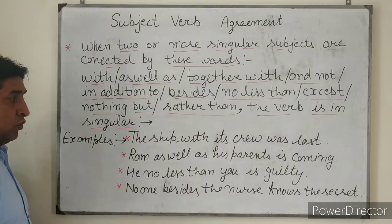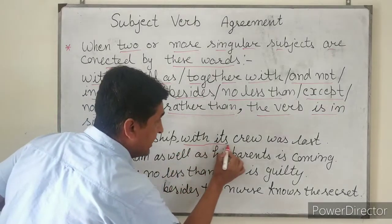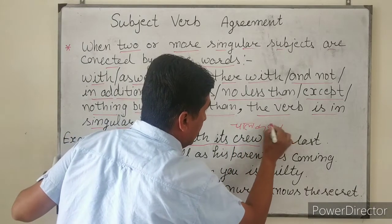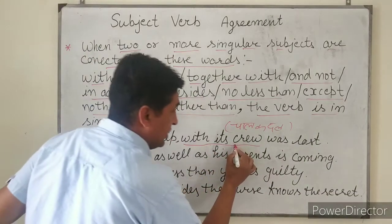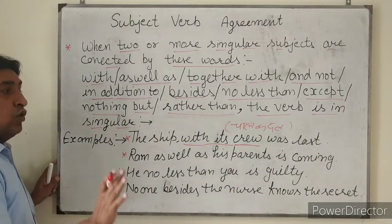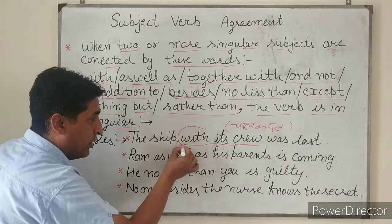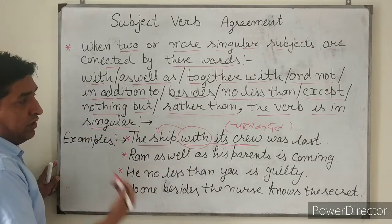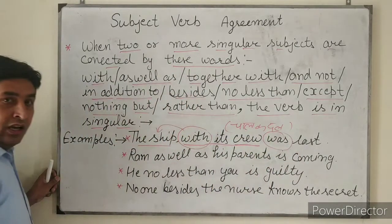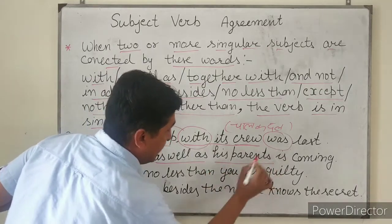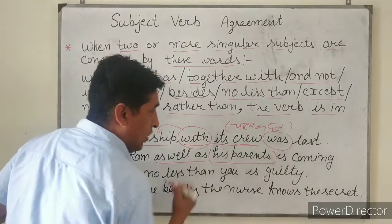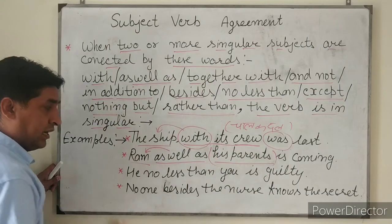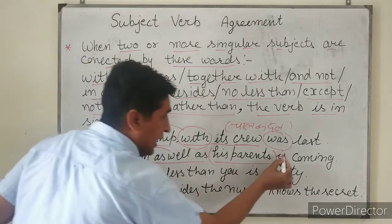For example: 'The ship with its crew was lost.' Here, 'with' connects the subjects, and the verb agrees with the word before 'with' — which is 'ship,' a singular word — so we use 'was.' Next example: 'Ram as well as his parents...' — 'his parents' is plural, but since 'Ram' is the first subject and is singular, the verb used is 'is,' agreeing with 'Ram.'